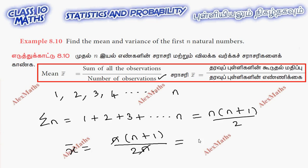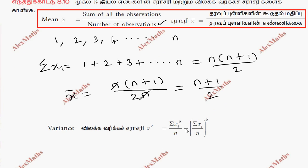Cancel n, so the mean is n plus 1 by 2. For the observations, sigma xi, to find the variance, use the variance formula: sigma xi square by n minus sigma xi by n whole square.